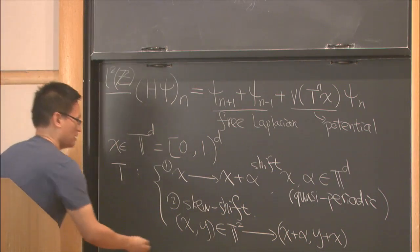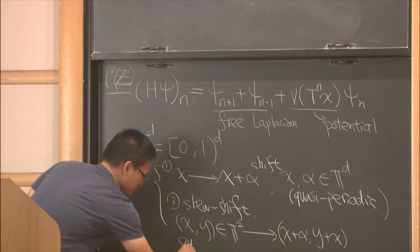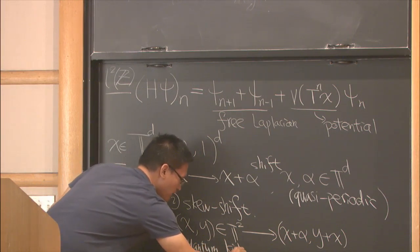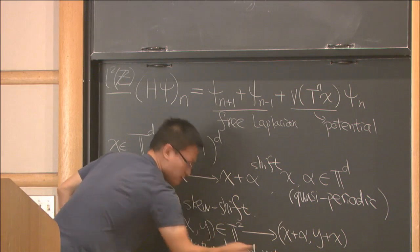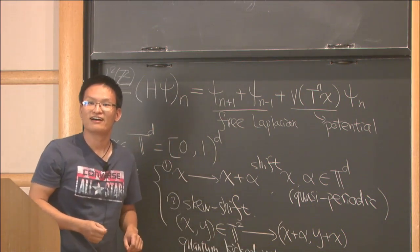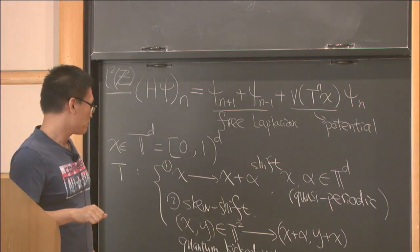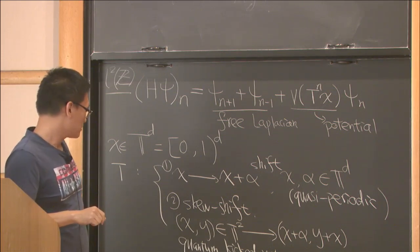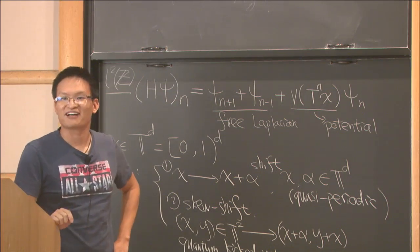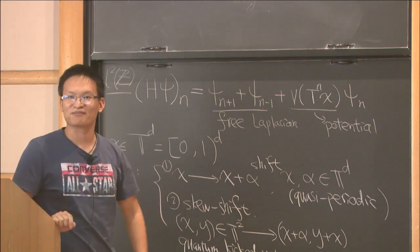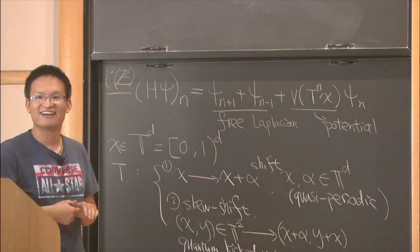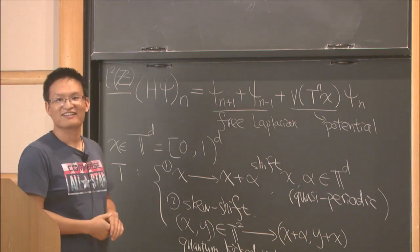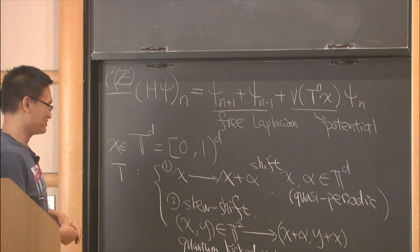So skew shift arises from quantum kicked rotor problem. It's a very special skew shift. You don't allow a more general function? Why that's very special? Is that because what you can deal with? I didn't know there are general skew shift. I know there are higher dimensional, but I didn't know you can glue anything with a function. It's just a little function. Yeah, but this is the one I knew.